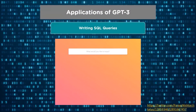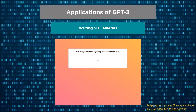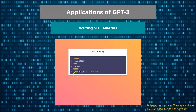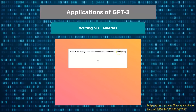The GPT-3 model can help you write SQL queries given a line of text and a table. Here the user wants to find out how many users have signed up since the start of 2020. GPT-3 automatically generates the SQL query: SELECT COUNT(ID) FROM users WHERE created_at >= January 1, 2020. Similarly, if you want to find the average number of influencers each user ID is subscribed to, GPT-3 will automatically create the corresponding SQL query.